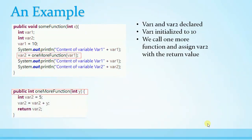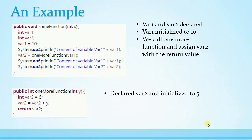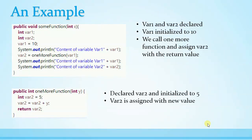Here is oneMoreFunction, which is called by someFunction. We declare a variable var2 and initialize it to 2. After that we assign var2 by summing up its content with the value in y — y is coming as a parameter. After that we return the variable var2 to the caller.